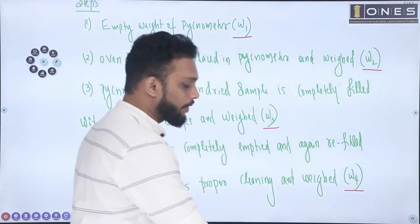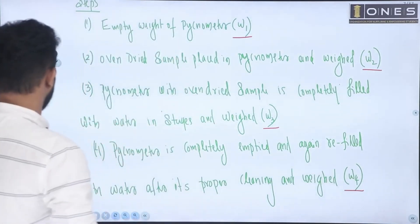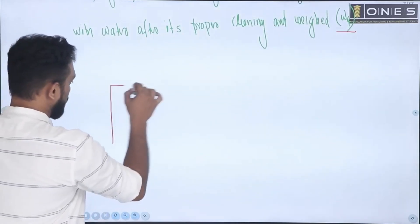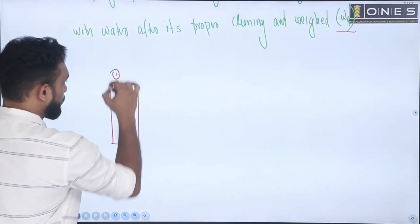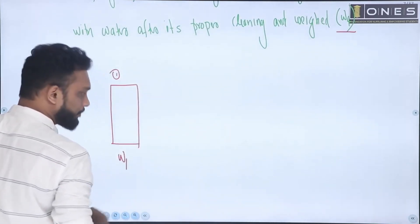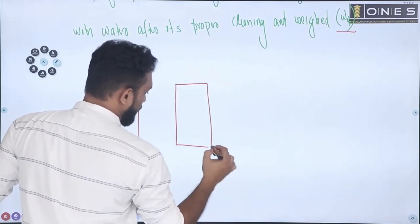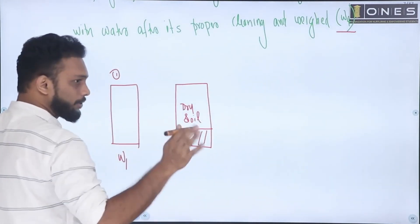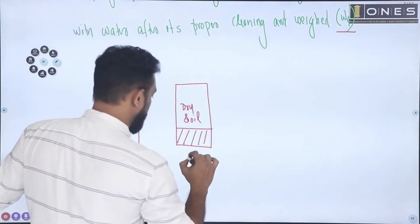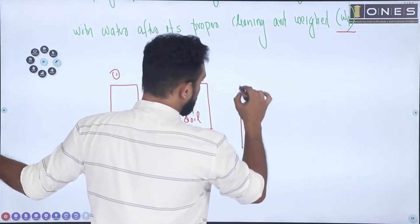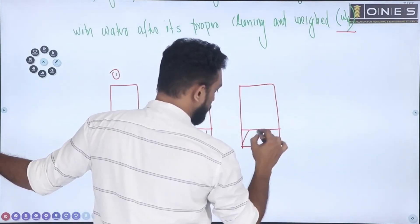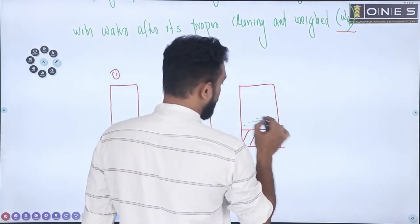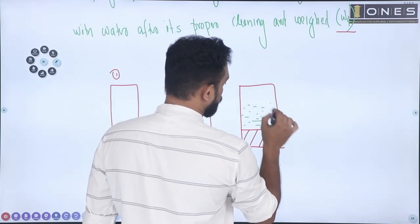Clear? So that is the figure. We will draw a figure in the same way. Let's draw that figure. The first figure shows the empty pycnometer — that is W1. Then we fill dry soil into the pycnometer — that is W2. Then we fill water into the pycnometer with soil — that is W3.